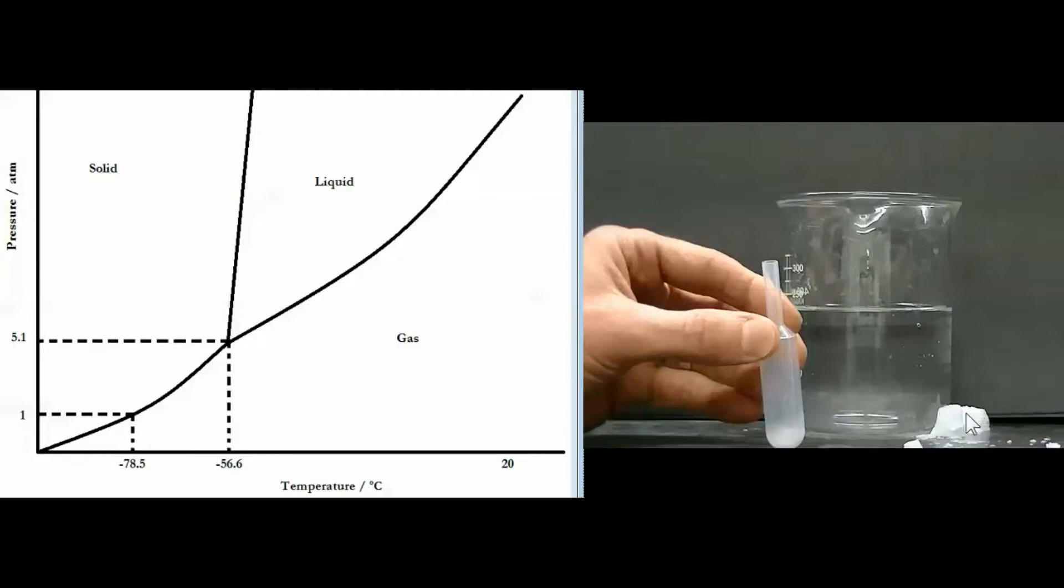And so in that case this piece of dry ice sitting on the lab bench is going to be going from the solid portion of the phase diagram to the gaseous portion of the phase diagram. We call that sublimation and so this little piece of dry ice over here is giving off CO2 gas.